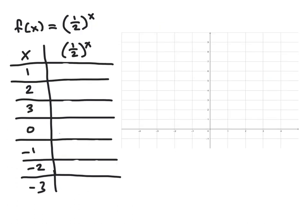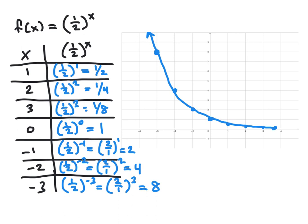The second exponential graph is f of x equals 1 half to the x. The process is exactly the same — fill in the table for various values of x, plot the points, and sketch the curve. Here are the values of 1 half to the x for our chosen x values. Notice that for negative values of x, the negative exponent interchanges the numerator and denominator of the fraction 1 half. So 1 half to the negative 2 power, for example, becomes 2 over 1 — the reciprocal of 1 half — raised to the positive 2 power, which equals 4.